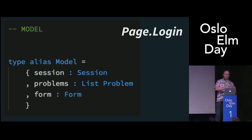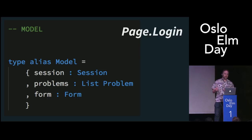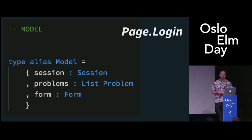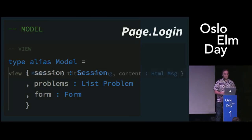So this is the login page's model. It has a session, which is sort of a shared application-level state that each of the pages have — things like the current logged-in user, which I use the term 'viewer' for because it's more concise. Problems refers to a list of form errors. And then finally we have a form, which represents the actual form data. Form is a record inside of a record, which is something I tend to avoid — I try to make things as flat as possible, unless I want to write functions that only accept that particular record. Which is exactly what I ended up doing for some of these view helpers.